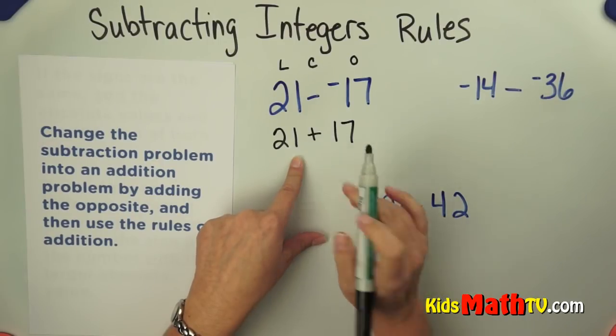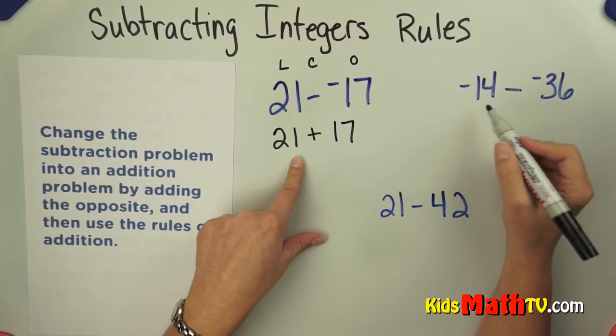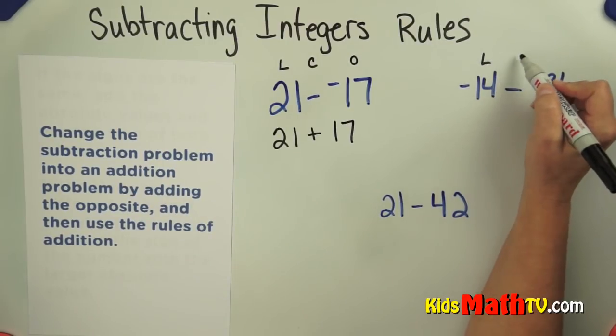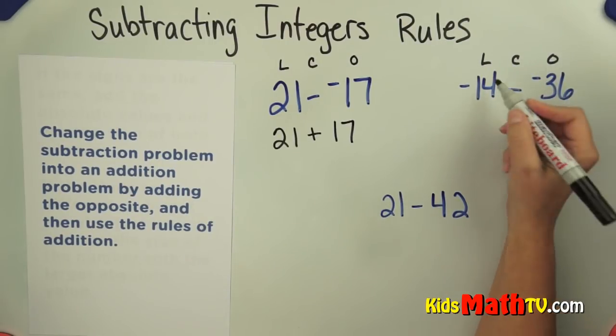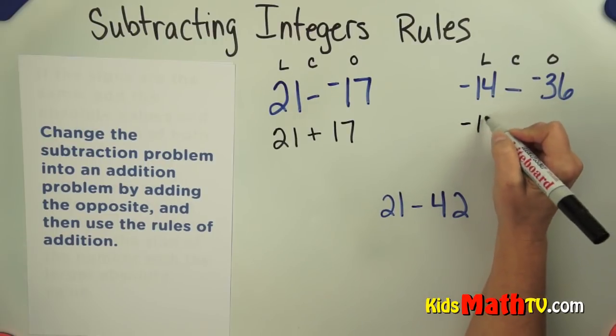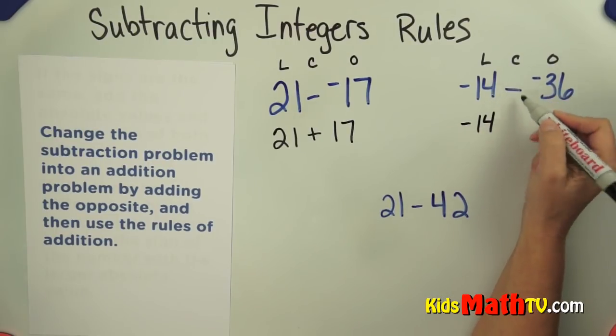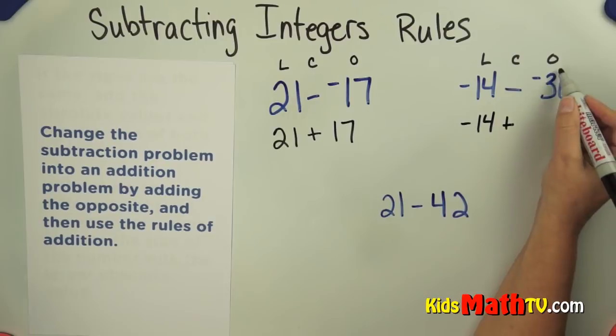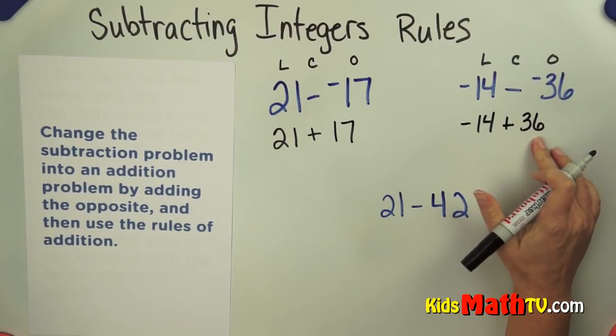Let's leave that for now and change these to addition. We're going to do the same, leave change opposite. Leave the first number, negative 14, change the subtraction to addition, and use the opposite of this number. Negative 36, the opposite is 36. Now we have an addition problem of integers.